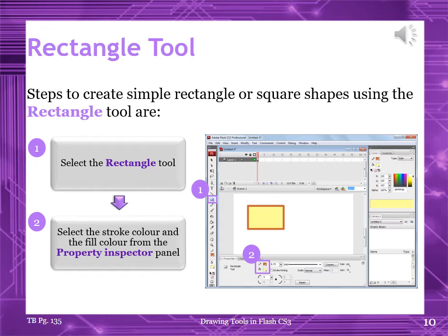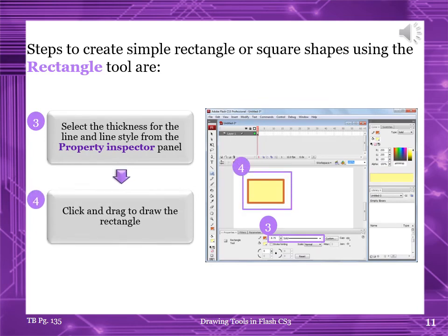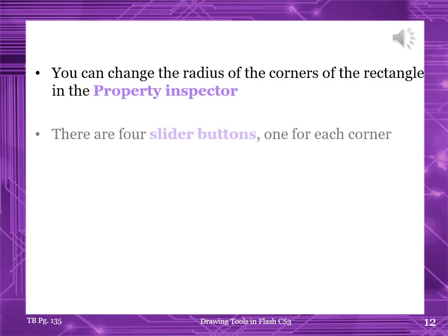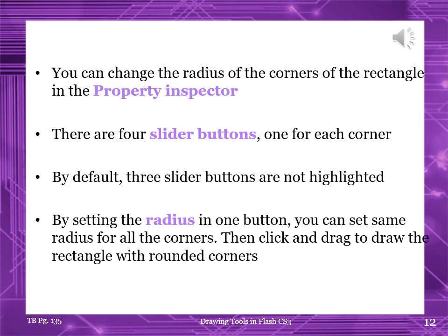Steps to create a simple rectangle or square shape using the rectangle tool: Step 1, select the rectangle tool — the simple one, not the primitive one. Step 2, select the stroke color and the fill color from the property inspector panel. Step 3, select the thickness for the line and line style from the property inspector panel. Step 4 — the last step — click and drag to draw the rectangle. You can change the radius of the corners of the rectangle in the property inspector. There are four slider buttons, one for each corner. By default, three slider buttons are not highlighted. By setting the radius in one button, you can set the same radius for all the corners. Then click and drag to draw the rectangle with rounded corners.